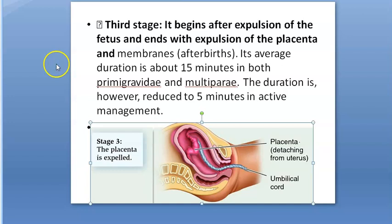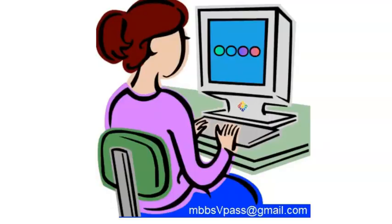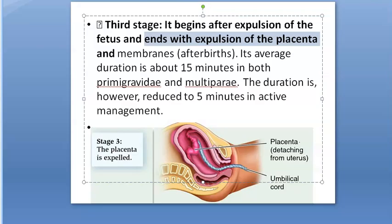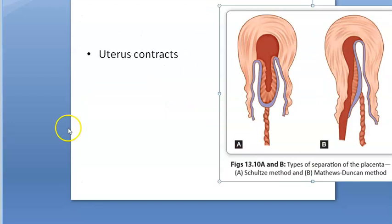In this video, let us look at the third stage of labor. The baby has already come out, and now the expulsion of the placenta has to happen. The third stage begins after expulsion of the fetus and ends with the expulsion of the placenta. This takes around 15 minutes, but with active management — controlled cord traction — it can be reduced to about five minutes.